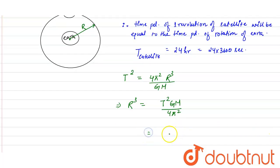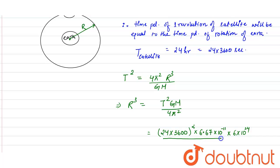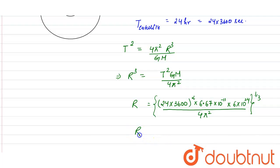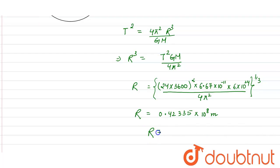Substituting values: T = 24×3600 seconds, G = 6.67×10⁻¹¹, mass of Earth = 6×10²⁴ kg, divided by 4π², all raised to the power 1/3. The radius of orbit comes out to be 0.42335×10⁸ meters, or approximately 42,300 kilometers. This is the radius of the orbit.